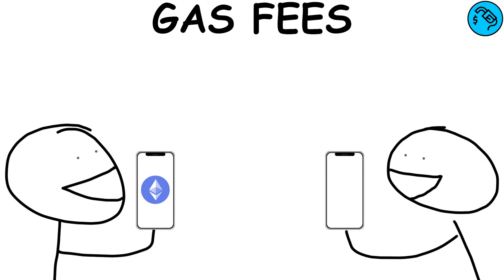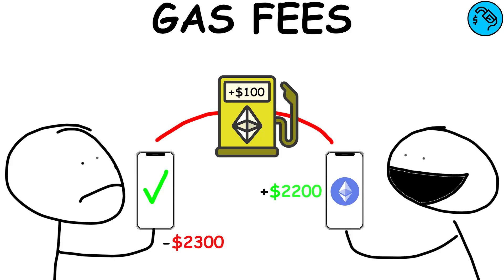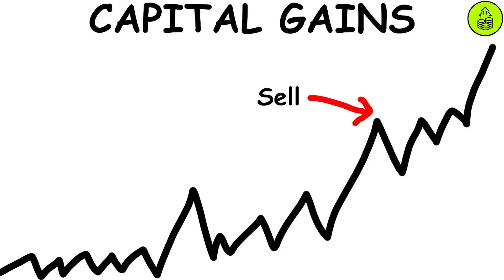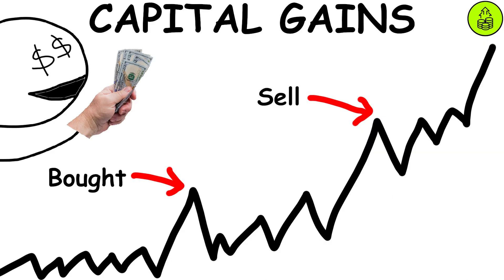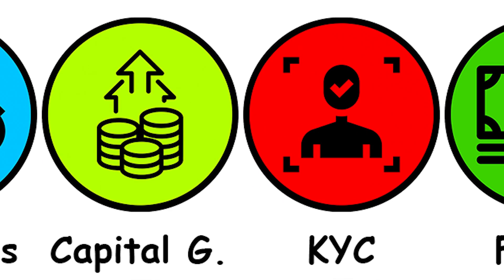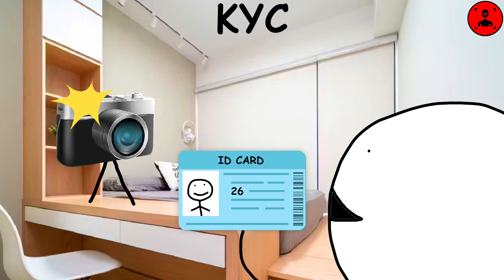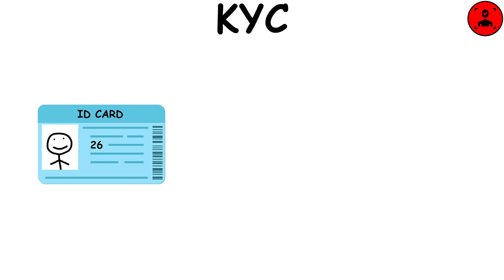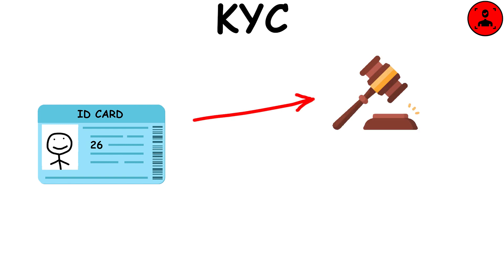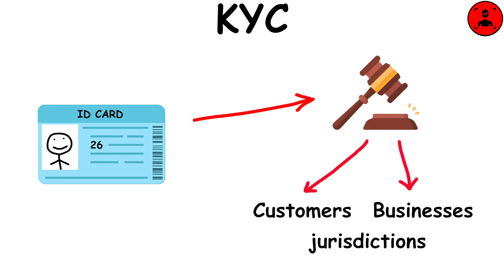Gas fees: they are paid by users to cover the energy expenditure required for their transactions on the blockchain. Capital gains: when you sell an asset for more than you originally paid for it. KYC: know your customer is the mandatory process of identifying and verifying the client's identity when opening an account. These requirements are enforced by governing bodies in both the customer's and the business's jurisdictions.